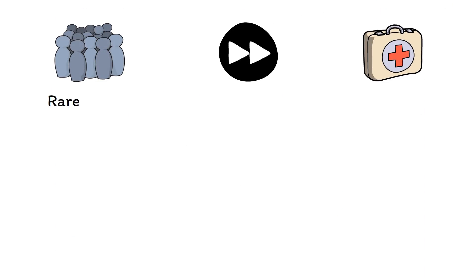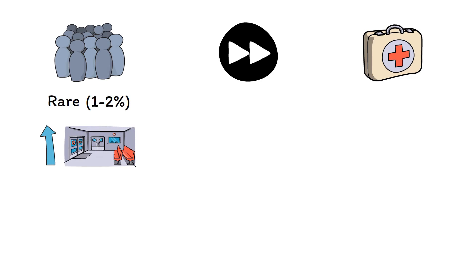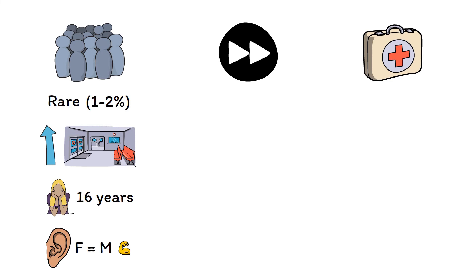Body dysmorphic disorder is relatively rare and is found in only around 1–2% of the population. However, its prevalence may be much higher in certain settings, making up around 10% of patients in dermatology clinics and up to a third of patients seeking cosmetic surgery. The disorder often begins during adolescence or early adulthood with a mean age of 16 years, though many patients don't seek their first surgical consultation until later in life. Despite societal stereotypes, body dysmorphic disorder is equally common among both men and women, though the content of dysmorphic beliefs tends to vary between genders — men are more likely to perceive body parts as too small, most often their muscles or genitals, while women are more likely to perceive body parts as too large or disfigured, such as their nose or ears.